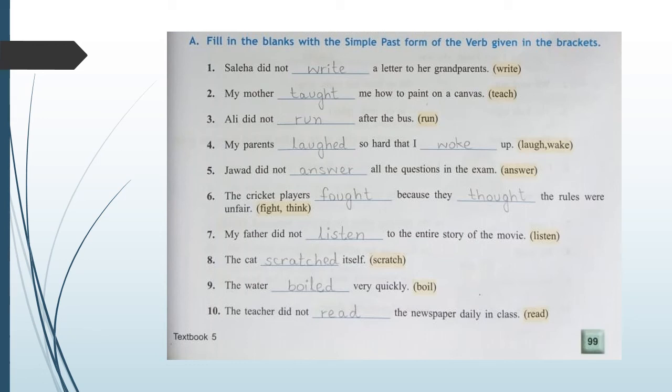There are two verbs: laugh and wake. 'My parents laughed so hard that I woke up.' Number 5 — answer: 'Jawab did not answer all the questions in the exam.' Number 6 — fight and think: 'The cricket players fought because they thought the rules were unfair.'